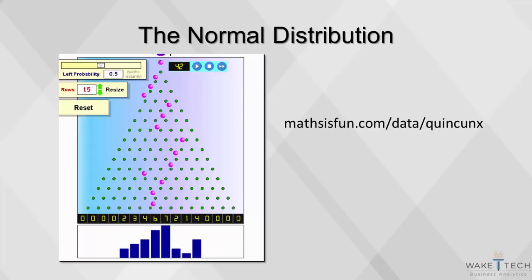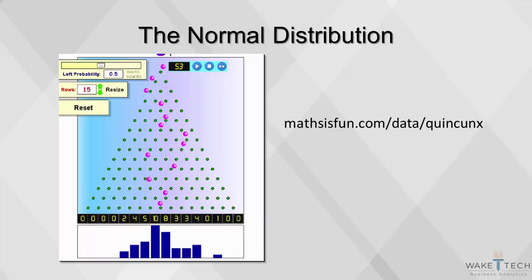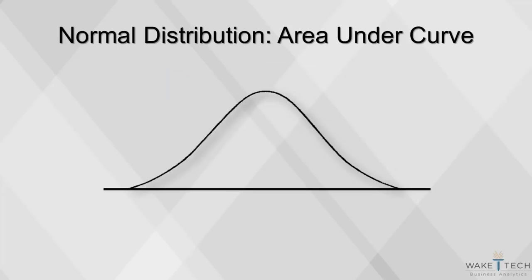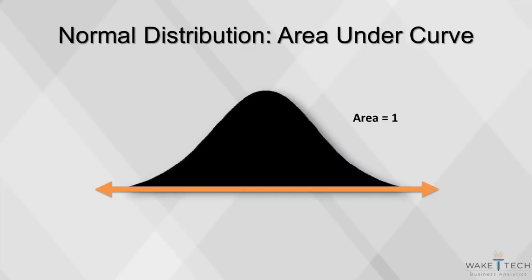The formulas for mean and standard deviation are very complex, but you will not have to compute them because the software will. With continuous variables, there is a continuum of possible values, such as all values between 0 and 100 or all values greater than 0. Instead of assigning probabilities to each individual value in the continuum, the total probability of 1 is spread over this continuum. Thus, the shaded area within the bell curve will always have an area of 1.